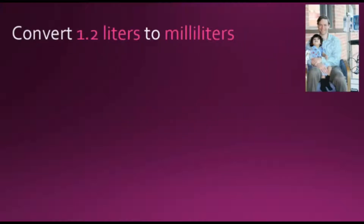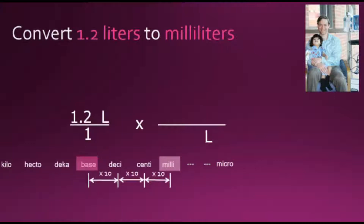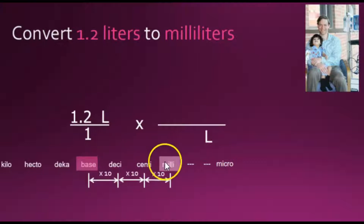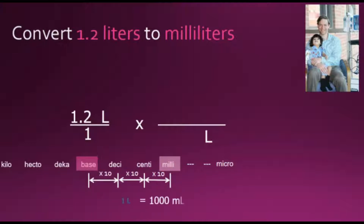The next example asks us to convert 1.2 liters to milliliters. Using the same procedure, we take the given value and express it as a fraction. We multiply it by a conversion factor fraction where we want to cancel out liters. Looking at our prefix table, the base unit — liters with no prefix — is further to the left, meaning it is larger than milliliters. So we place our 1 on liters. Counting the number of spaces, each representing a power of 10, gives us 1 liter equivalent to 1000 milliliters.